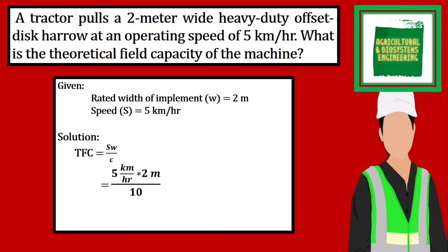We will use this value for the constant since the unit of measurement used in the problem is the metric system. We simply solve, giving us a final answer for our problem of 1 hectare per hour. That is now the solution to problem number 1.